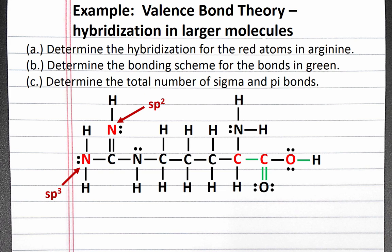When counting bonds, a double bond counts as one electron group. For the carbon on the left, we have four electron groups, so we need sp3 hybridization. For the carbon on the right, we have three electron groups, so we need sp2 hybridization. And for the oxygen atom, we have four electron groups, so we need sp3 hybridization.